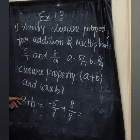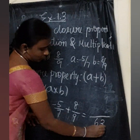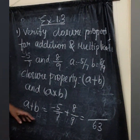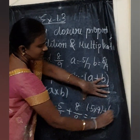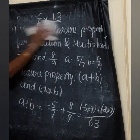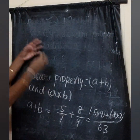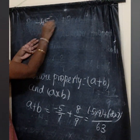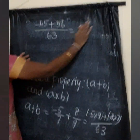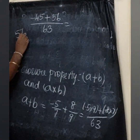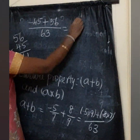The denominators are not the same — 7 and 9 are different. The LCM of 7 and 9 is 63. So we get minus 5 into 9 plus 8 into 7, all over 63. That is minus 45 plus 56 over 63, which equals 11 by 63.